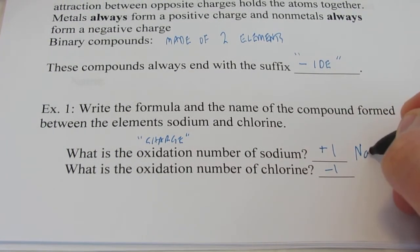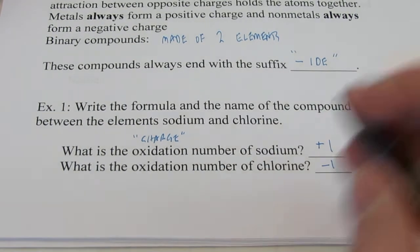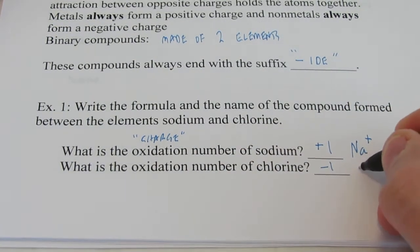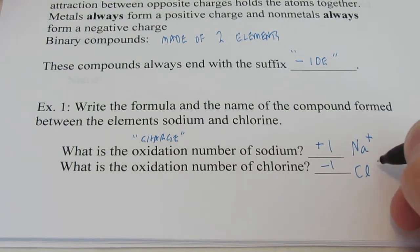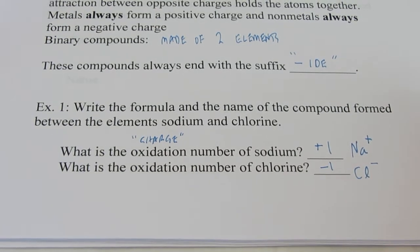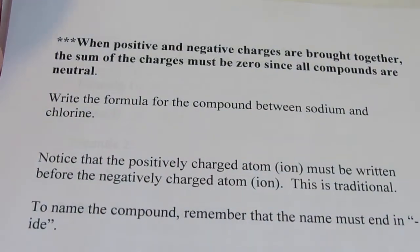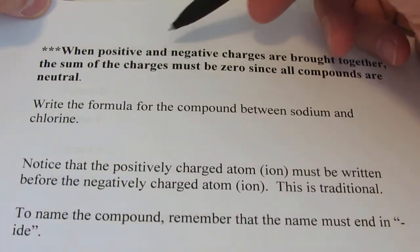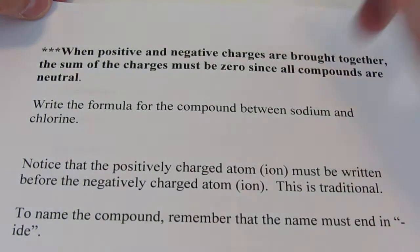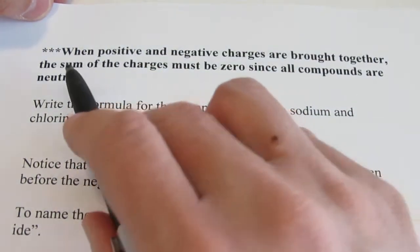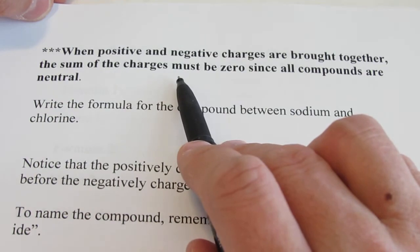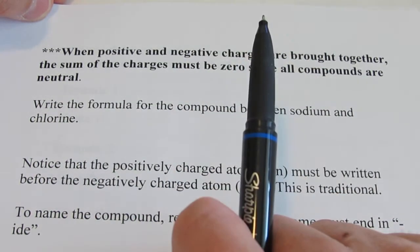So we have a sodium ion that's positive one. We usually write that as Na with a plus sign in the upper right-hand corner. And a chlorine ion that's negative one. Now this is important. When positive and negative charges are brought together, the sum of the charges must be zero, since all compounds are neutral.